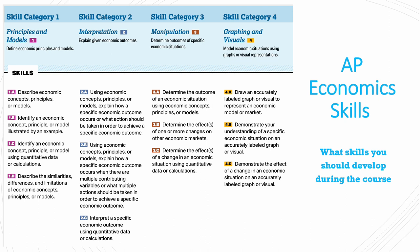The second one would be interpretation, where you would explain the given economic outcomes using economic concepts, principles, and models, explain them where contributing variables occur, and also interpret them using quantitative data or calculations. The third one would be manipulation, where you would determine outcomes of specific economic situations using economic concepts, principles, and models, determine the effects of one or more changes on other economic markets, and determine the effects of a change in economic situation using quantitative data or calculations.